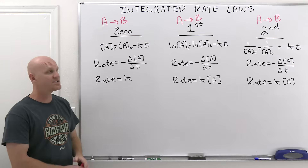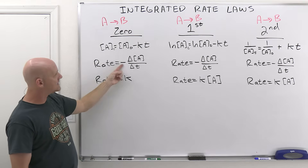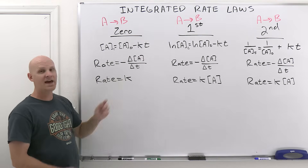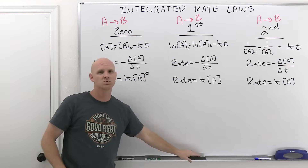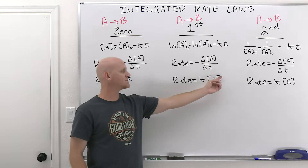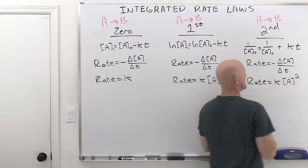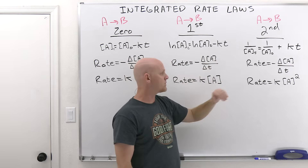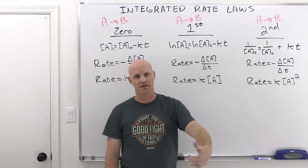What I want to remind you of is the rate expression. For a simple reaction of A going to B, a valid rate expression for reactant A would be negative change in concentration of A over change in time. The rate law for zero order is simply rate equals K — it implies the reactant to the zero power, and anything to the zero power is one, so it's essentially rate equals K. For first order, the exponent is one, so rate equals K times A. And for second order, the exponent is two, so rate equals K times A squared.